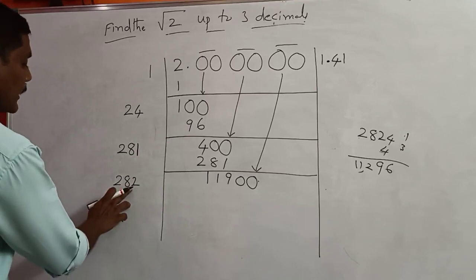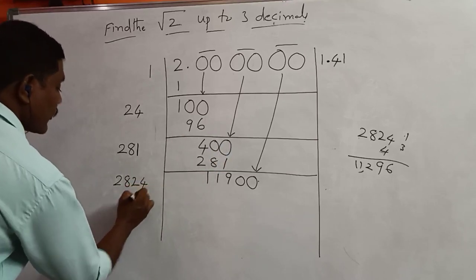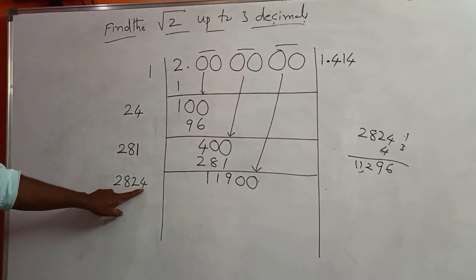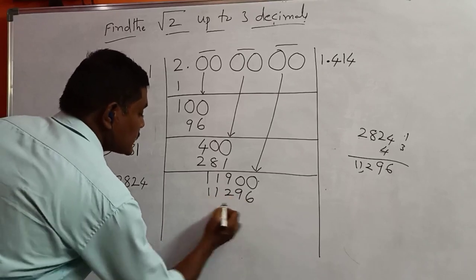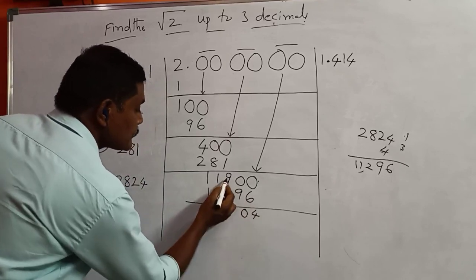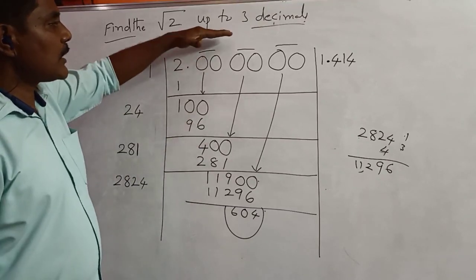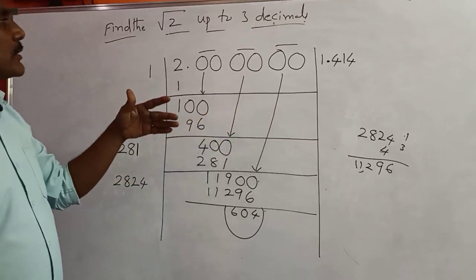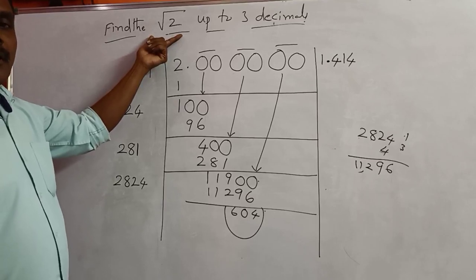So 282 which equals now 2800. We have to write down 4 here, the same number on the right. 2824 into 4. The answer we find here is 11296. Subtracting gives 206. Students, observe this process and you have to find square roots for more numbers: root 3, root 5, root 7, root 8.